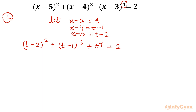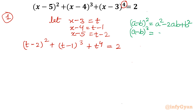Now let me write the formulas. (a-b)² = a² - 2ab + b², and (a-b)³ = a³ - 3a²b + 3ab² - b³. Both identities are very useful. Applying (a-b)² to (t-2)²: I get t² - 4t + 4.